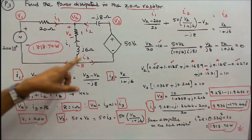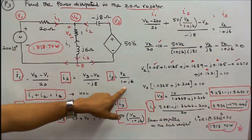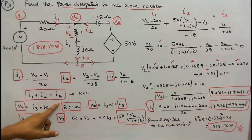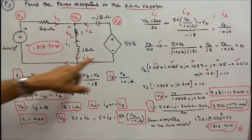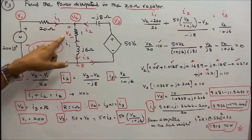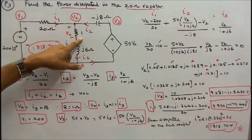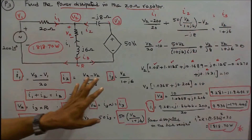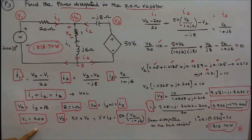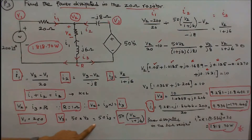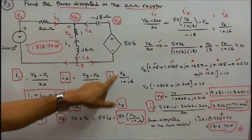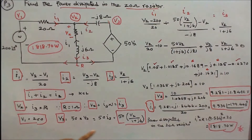I2 is equal to (V3 minus V2) divided by minus j8 ohms. I3 equals V2 divided by (1 plus j6). According to Kirchhoff's current law, I1 plus I2 equals I3. Here Vx equals I3 times R, where R equals 1, so Vx equals I3. V1 equals 200, and V3 equals 50 times Vx equals 50 times I3. Since I3 equals V2 divided by (1 plus j6), therefore V3 equals 50 times V2 divided by (1 plus j6).